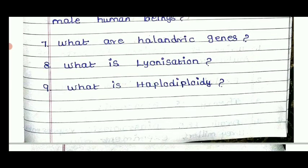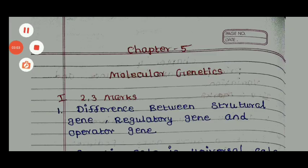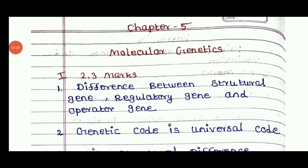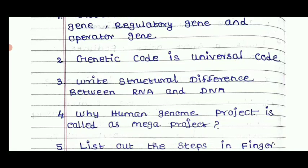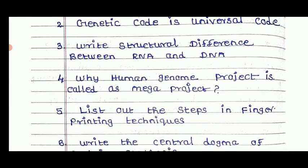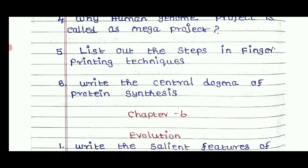For Chapter 5, Molecular Genetics, important questions include: differences between structural genes, regulatory genes, and operator genes; why the genetic code is considered a universal code; the structural difference between RNA and DNA; why the Human Genome Project is called a mega project; list the steps of the DNA fingerprinting technique; and write the central dogma of protein synthesis.